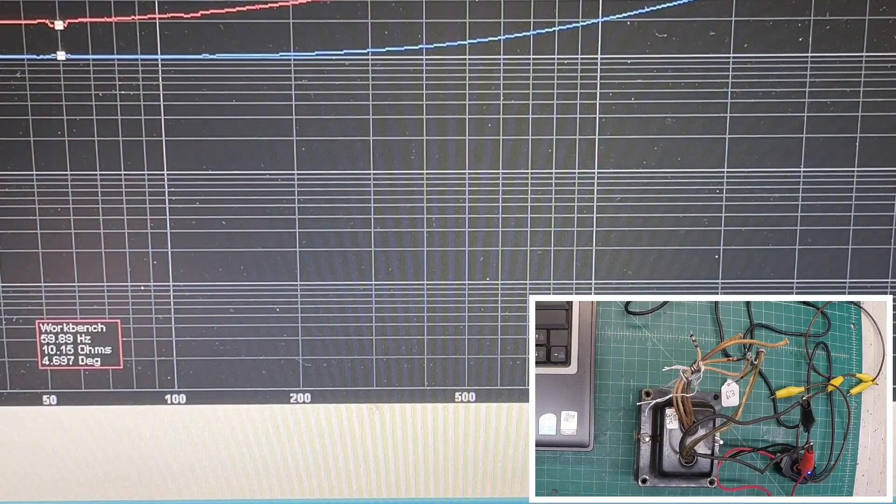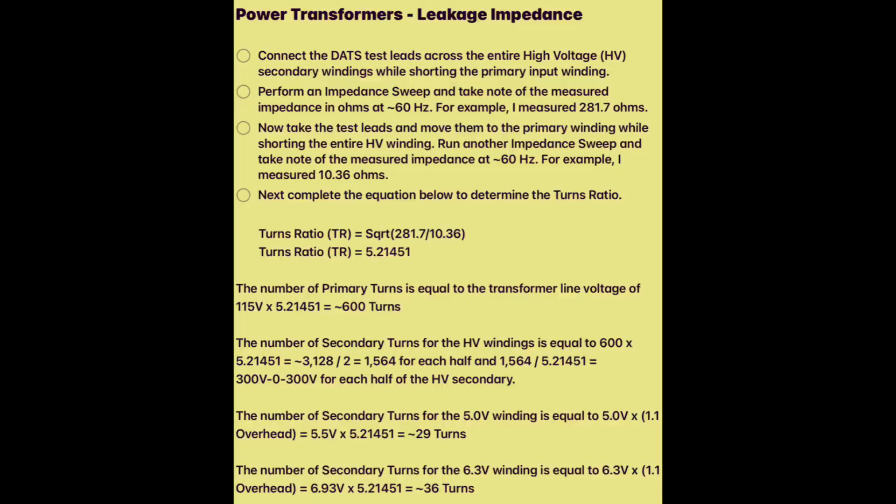We'll plug those numbers into the calculator. As you can see on the screen, I'm showing the steps that I took, and you can see the math below for the earlier measurement — how to extrapolate the number of turns and the voltage itself. You'll notice I used a 10% overhead for the 5 volt and 6.3 volt winding to calculate the number of turns. In most cases that would be adjusted down a bit, somewhere maybe between 5 and 8%.